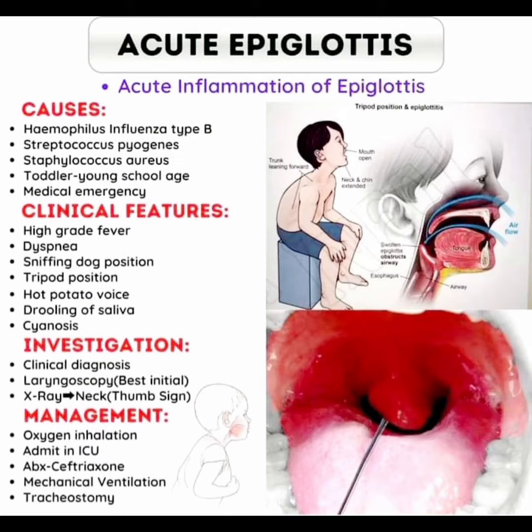Clinical features include high-grade fever, dyspnea, and the sniffing dog position. Look at the image of the child — he is sitting in the sniffing dog position and tripod position. There is also hot potato voice and drooling of saliva. Drooling is related to acute epiglottitis — remember that.